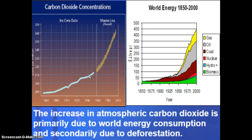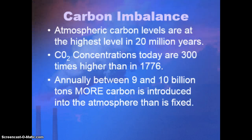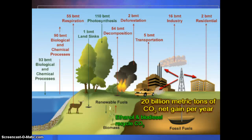We can look at data from ice cores and measurements collected since the 1960s and see a huge increase in atmospheric CO₂ — very troubling for many reasons. That increase is clearly tied to the types of energy we now use. This carbon imbalance has given us the highest CO₂ level in 20 million years. Right now we have 300 times higher CO₂ concentration than in 1776, and annually we're introducing 9 to 10 billion tons more carbon than we're fixing.